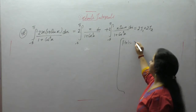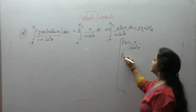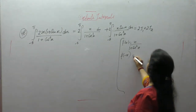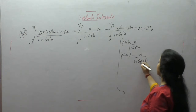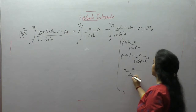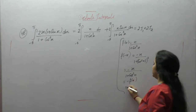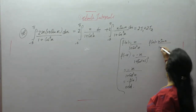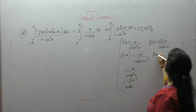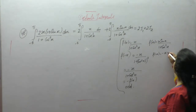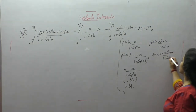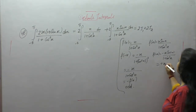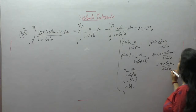For I1, the function is x upon (1 + cos²x). Change the sign since the limits are minus a to a: f(−x) = −x upon (1 + cos²(−x)). Since cos(−x) = cosx, this gives −x upon (1 + cos²x), which equals −f(x). Therefore the function is odd. For I2, the function is x sinx upon (1 + cos²x). Substituting −x: (−x)·sin(−x) upon (1 + cos²(−x)). Since cos(−θ) = cosθ and sin(−θ) = −sinθ, this becomes x sinx upon (1 + cos²x).